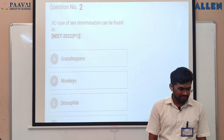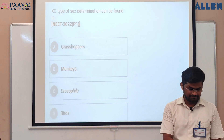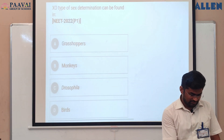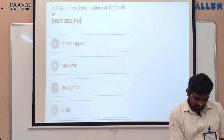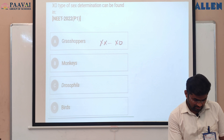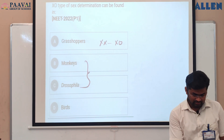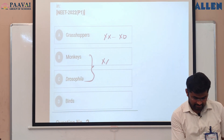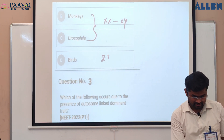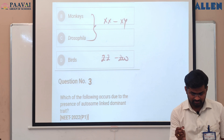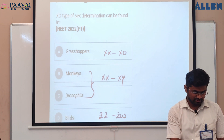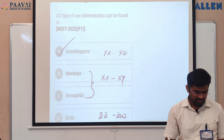Next question: XO type of sex determination can be found in which organism? In grasshoppers, the sex determination is XX and XO type. In monkeys and Drosophila, the type of sex determination is XX and XY. In birds, the sex determination is ZZ and ZW type. So the correct answer is XO type of sex determination can be found in grasshoppers.